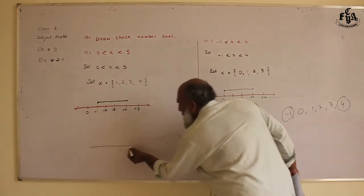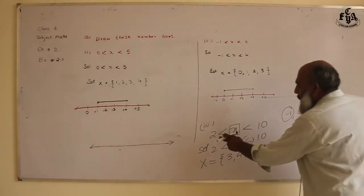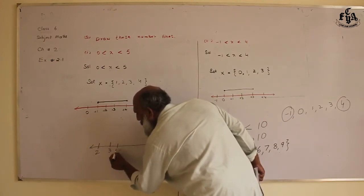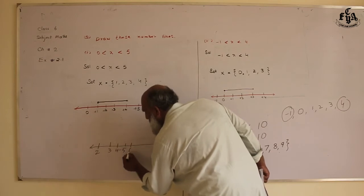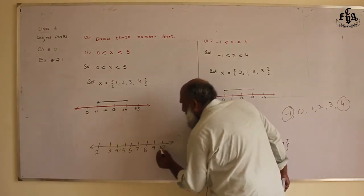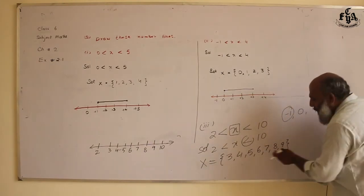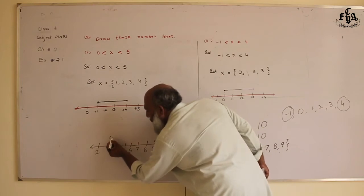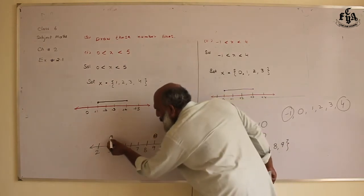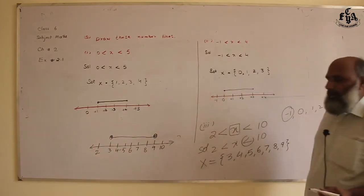Draw a number line. On it, mention: two, three, four, five, six, seven, eight, nine, ten. The numbers that come into capital X are three up to nine. Put a dot at three, and put a circle at nine. Connect the two. This is your representation on the number line.